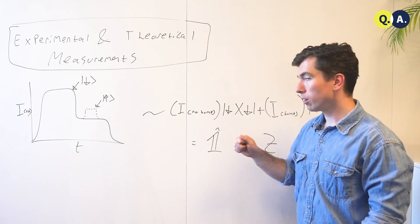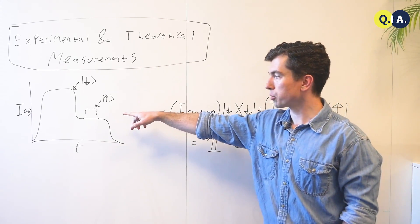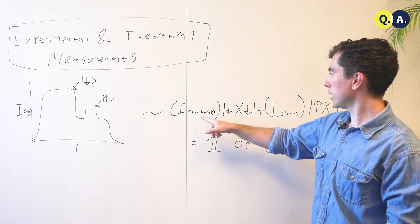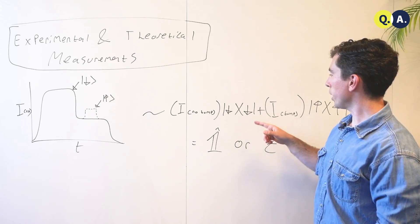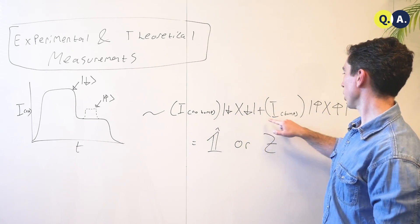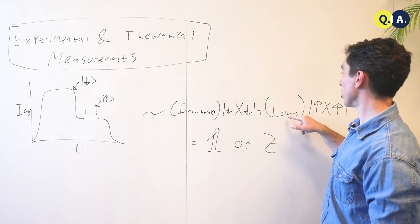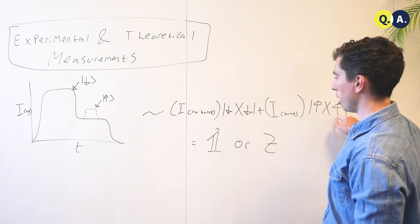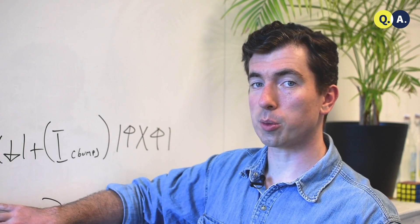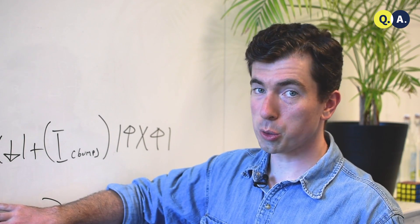Now, the important thing about these two signals being distinguishable, about there being a large difference between them, is that if they're equal, we end up with some number times down down, plus some number which is identical, times up up. So the measurement operator becomes the identity, which doesn't discern between the up and down states. So it's useless as a measurement.